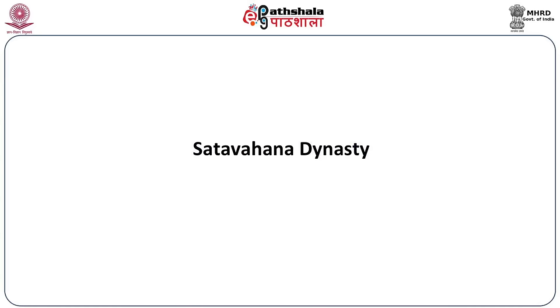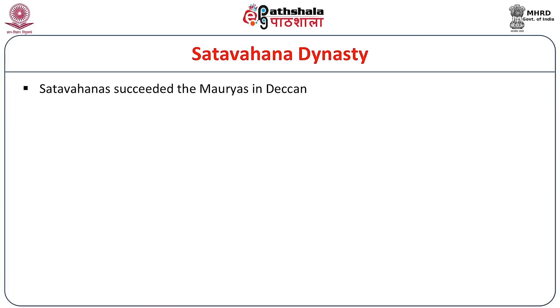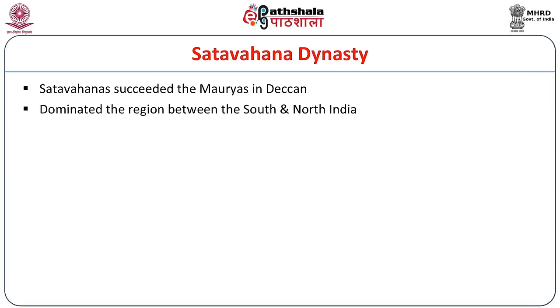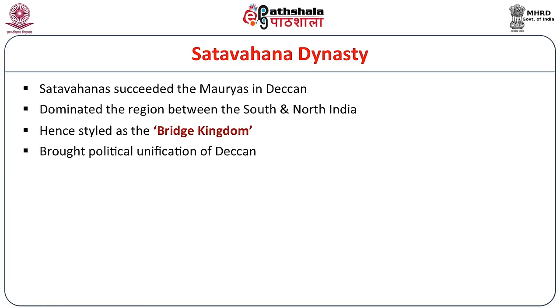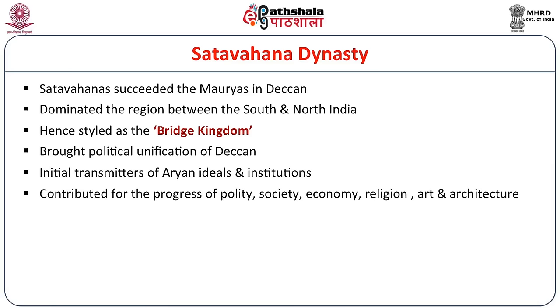Now let us know about the history of the Shatavahanas, who rose to prominence in the Deccan with Pratishtanapura as capital. The Shatavahanas succeeded the Mauryas in the Deccan and dominated the region between South and Northern India. Hence this dynasty is styled the 'Bridge Kingdom.' They brought political unification of the Deccan and were the initial transmitters of Aryan ideals and institutions, contributing to the progress of polity, society, economy, religion, art, and architecture.